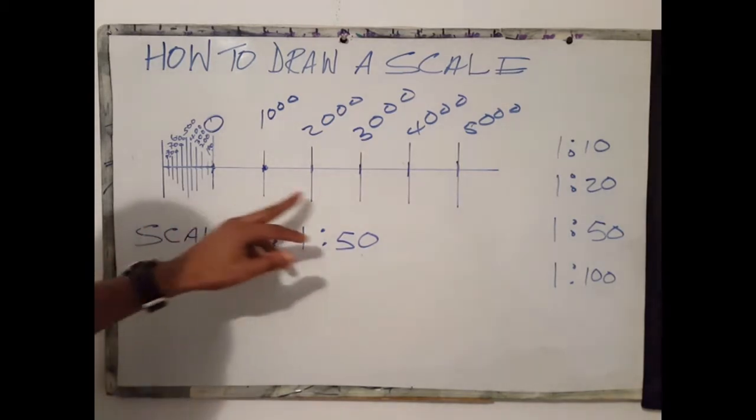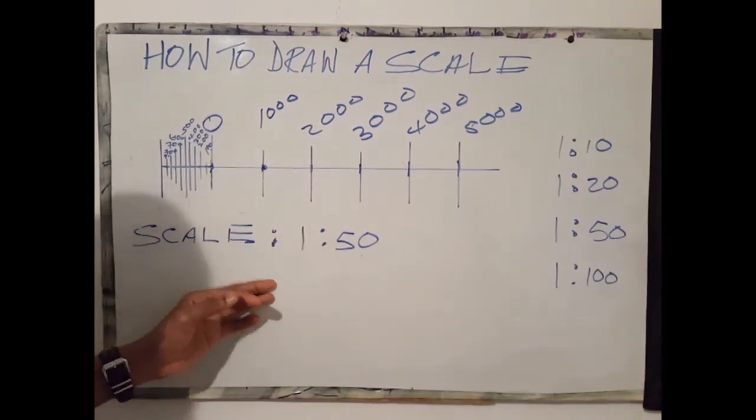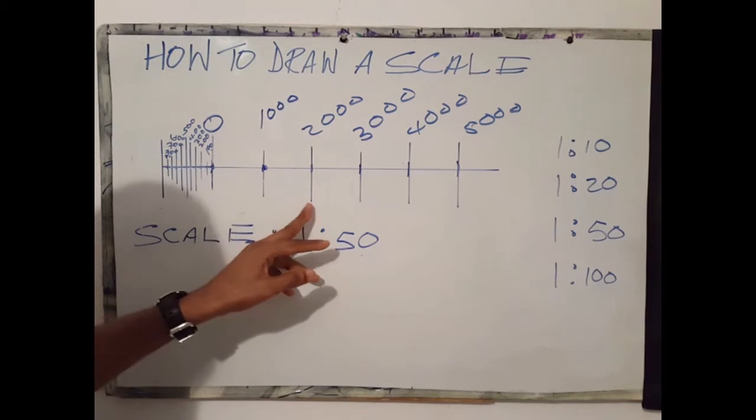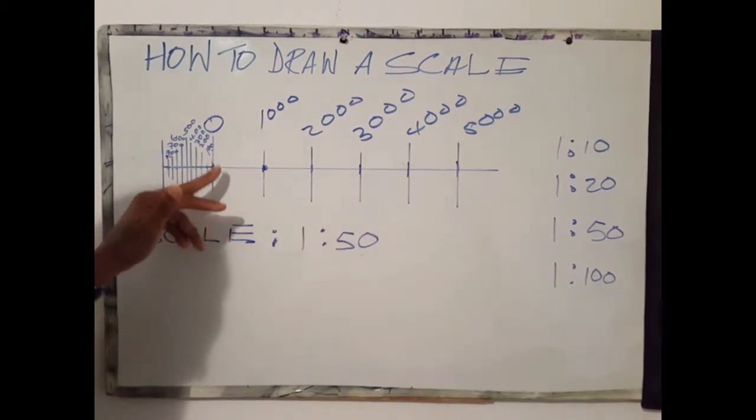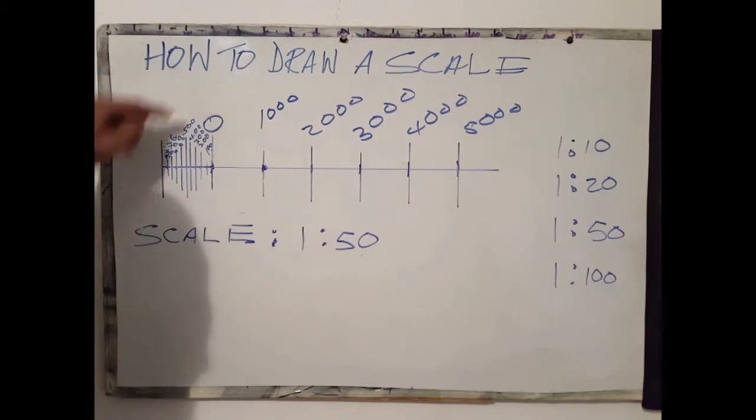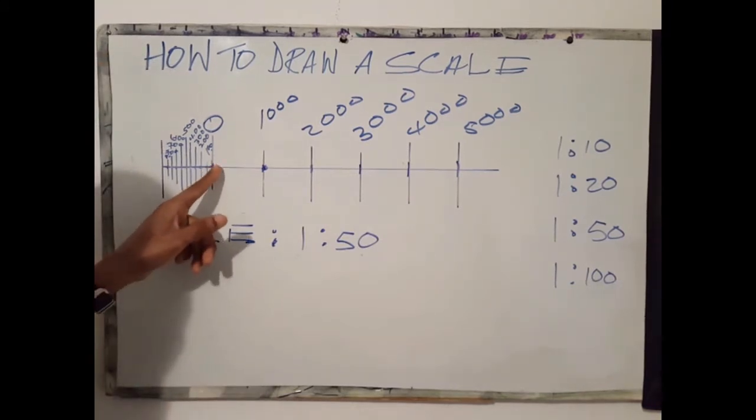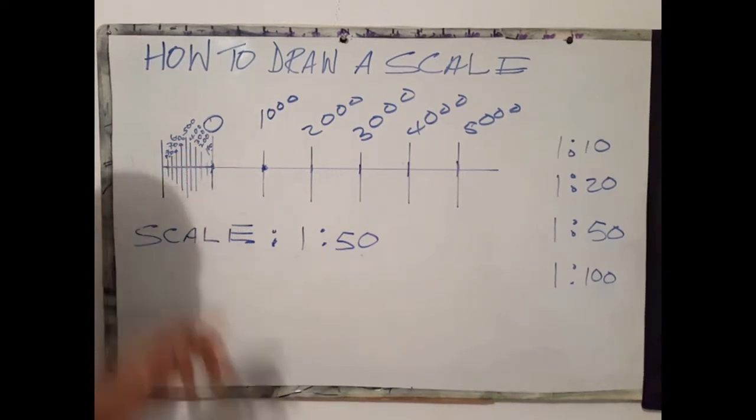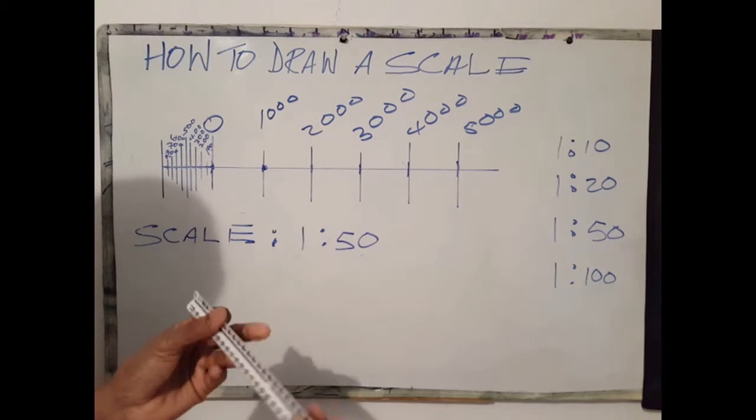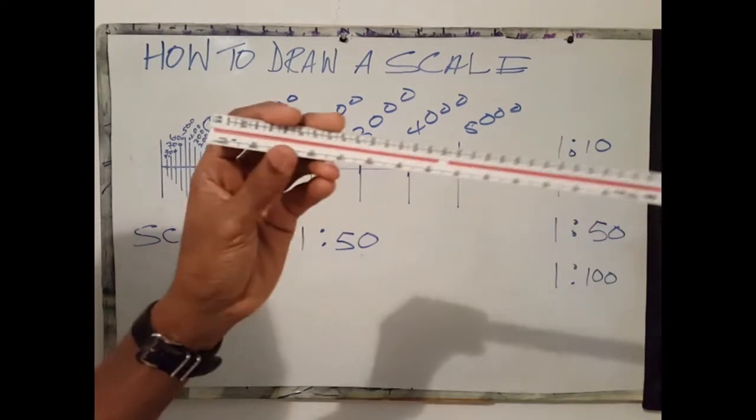What we have here is a 1 to 50 scale. On this scale we have some equally spaced increments or hash marks. It's important to know that zero starts at the second line, not at the first line. The first increment is used for the hundreds.